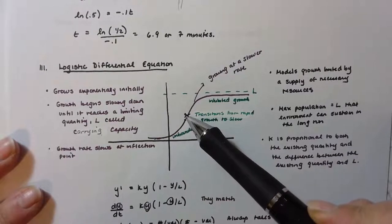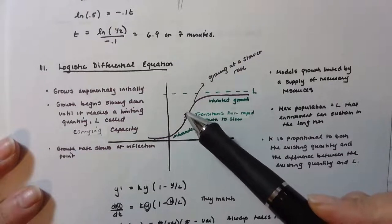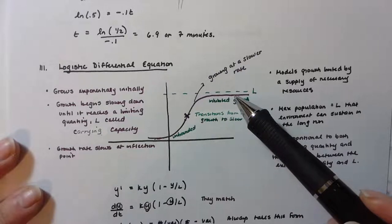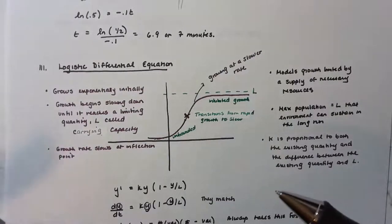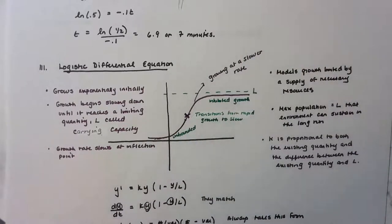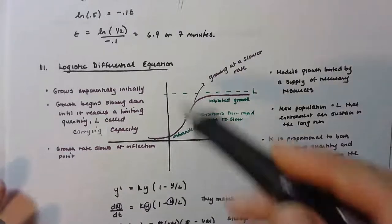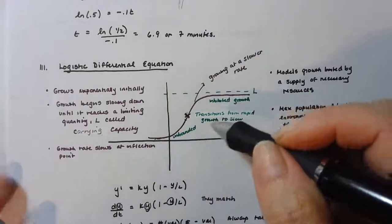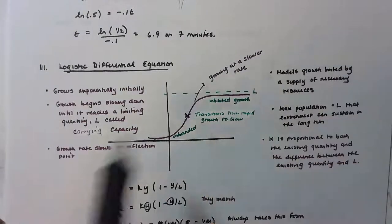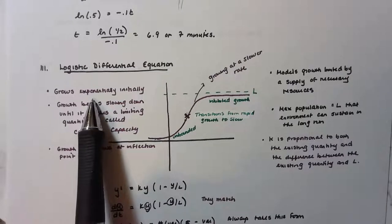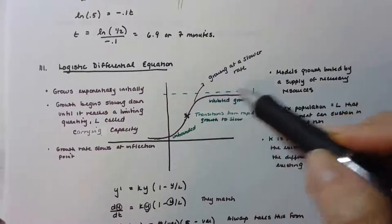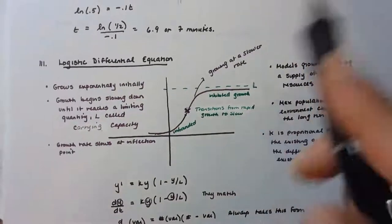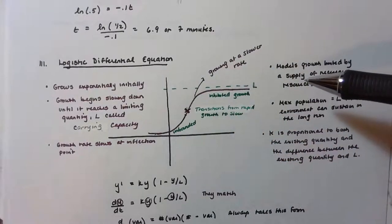This inflection point is the transition from rapid growth to slow growth — just as with a population of people, bacteria, or animals, the environment sets a limit. If the population grew exponentially forever, we'd run out of food and water. The curve approaches a limiting quantity called the carrying capacity, denoted big L, which acts as a horizontal asymptote.